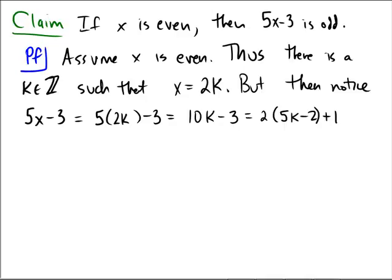Because you can see very quickly here that we have 10k right there. And then this would be minus 4, but then the plus 1 would be minus 3. So I haven't changed it, I just factored it in a strategic way.